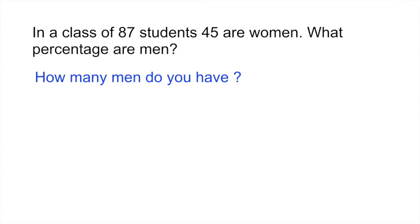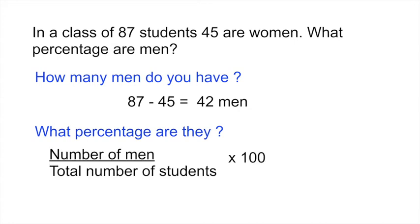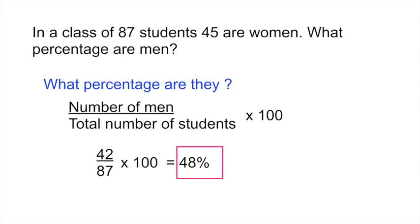You take the total number of students, 87, and subtract 45, which was the number of women, and that gives you 42 men. How do you find the percentage that the men make up? You use this formula: number of men divided by total number of students. Because they're asking for a percentage, you multiply by 100. So the number of men was 42, divided by the total number of students, which was 87, and then multiplied by 100, gives you 48%.